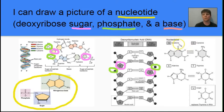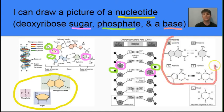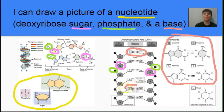We'll highlight the bases in a salmon color. The different bases found in DNA molecules are guanine, cytosine, adenine, and thymine. We always have adenine pairing with thymine, and we always have cytosine pairing with guanine.